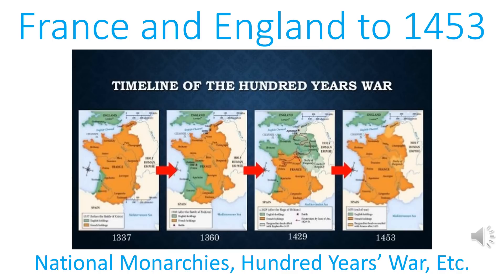Both France and England would come to exemplify this model of medieval government, and this medieval style of government would in turn evolve into the modern nation-state, which is currently the dominant model of governance in the world. The other thing I really want to look at, because it looms large in any account of the Middle Ages, is the Hundred Years' War.